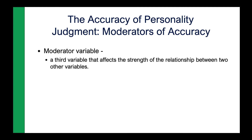I talked about self-monitoring in class a chapter or two ago. Self-monitoring is the extent to which a person changes or modifies the expression of their personality and their behavior when they're in different settings. If they're in a setting that requires them to be more reserved, like a funeral or a traditional classroom, they tend to change their outward behavior to fit that setting. Whereas if they're in a less structured setting — what we would call a weak situation — they feel more comfortable expressing themselves.